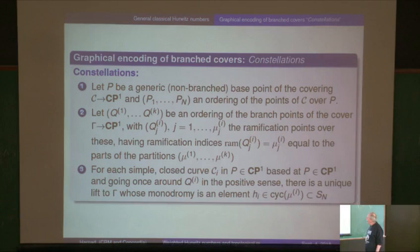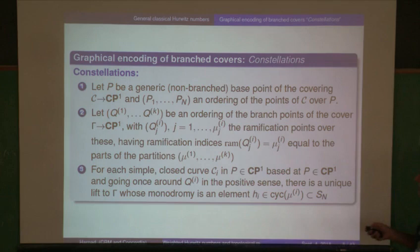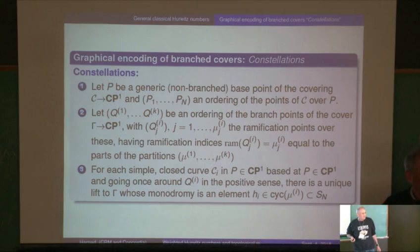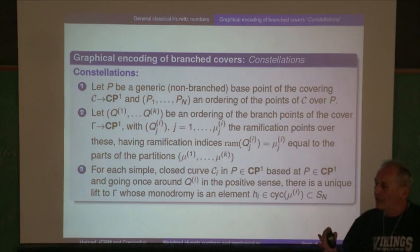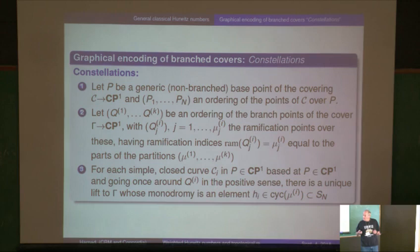Now here's a very nice thing: there's a one-to-one correspondence between a certain set of graphs — which combinatorialists call maps or constellations — and branched covers. Anyone familiar with the book by Lando and Zvonkin knows what a constellation is. So it's a way to represent all the details of a branched covering in a certain bipartite graph. We're going to interpret the tau function as just a weighted version of constellations.